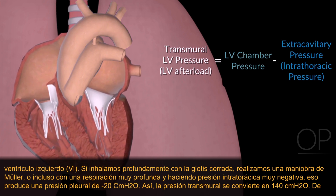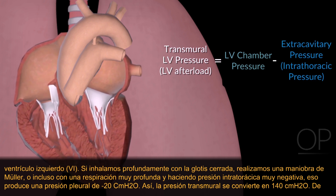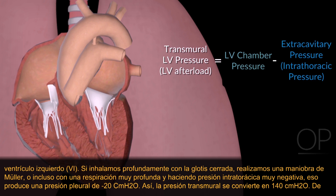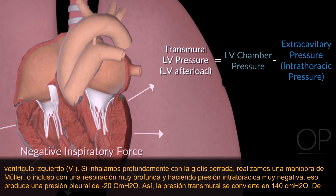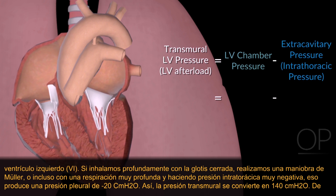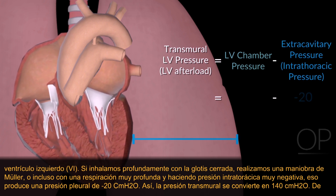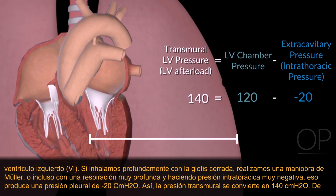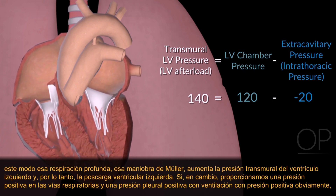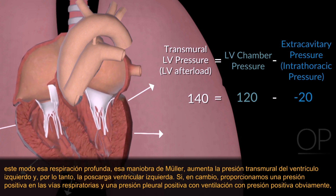If we breathe in deeply against a closed glottis — performing a Müller maneuver — or take a very deep breath in, making our intrathoracic pressure very negative, that produces an intrathoracic or pleural pressure of minus 20. The transmural pressure then becomes 140. So that deep breath, that Müller maneuver, increases the transmural left ventricular pressure and therefore the left ventricular afterload.